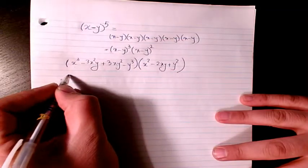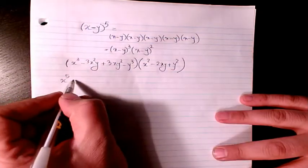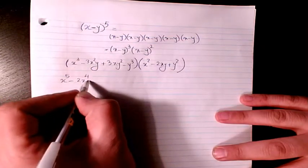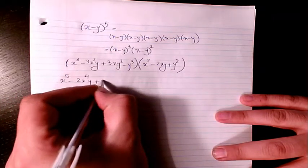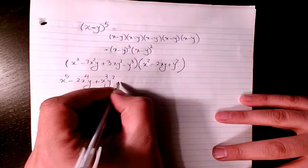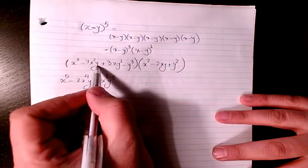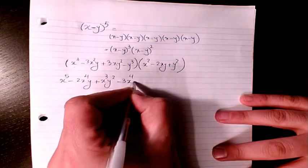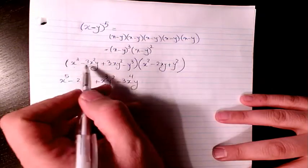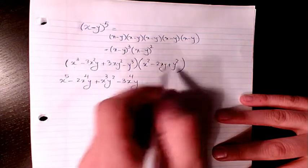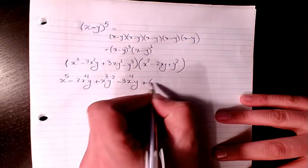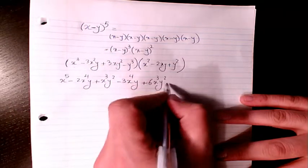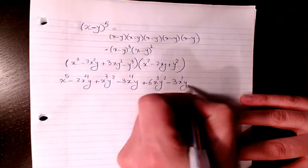x cubed times x squared is x to the power of 5. Then x cubed times negative 2xy gives negative 2x to the power of 4 y, plus x cubed y squared. Then negative 3x squared y times x squared gives negative 3x to the power of 4 y. Then negative 3x squared y times negative 2xy gives positive 6x cubed y squared. Then negative 3x squared times y squared gives negative 3x squared y cubed.